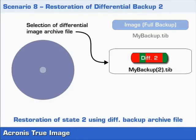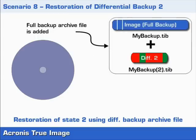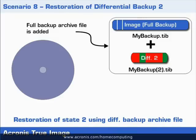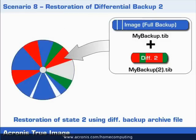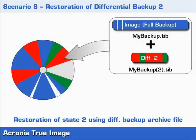In the restoration of state 2 using a Differential Backup, a restore image starts by choosing the last archive file to be restored. However, we don't need, as in the Incremental method, all of the backups made in between. Additionally, to the last backup we only need the full backup. The resulting restored partition is of course exactly the same using either the Incremental or Differential method.